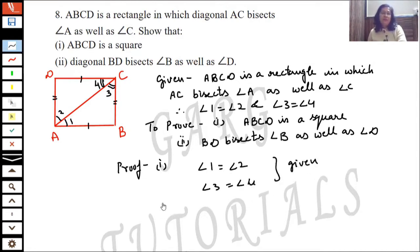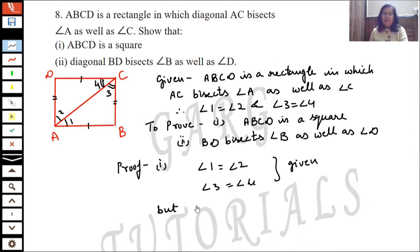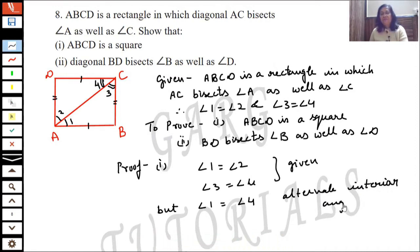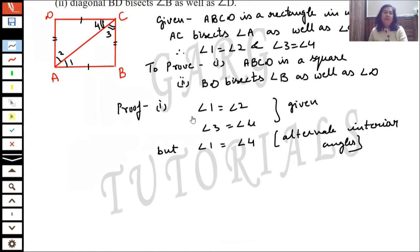Now, angle 1 is equal to angle 4 — these are alternate interior angles, because opposite sides of a rectangle are equal and parallel. So angle 1 is equal to angle 4 by alternate interior angles.